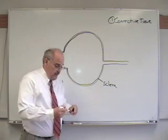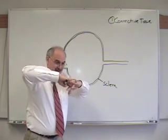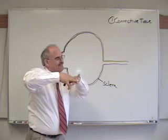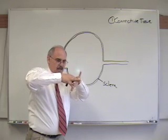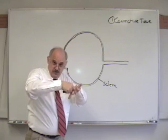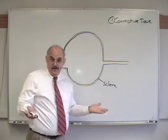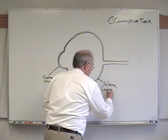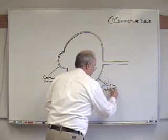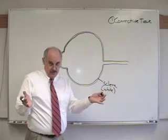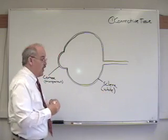Whereas the sclera, if you look at those collagen sheets, they're interdigitated, if you will. I guess that's a word. And so, when the light goes through, it gets interfered, and it becomes opaque. So, the sclera is white or opaque because it has a different arrangement of the connective tissue layers of the collagen.